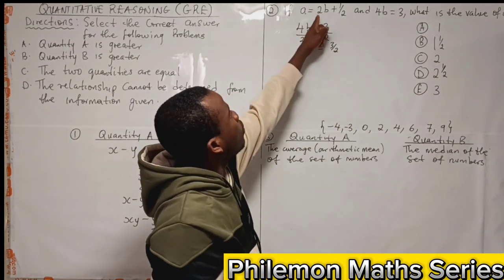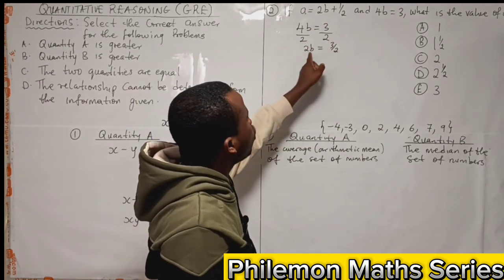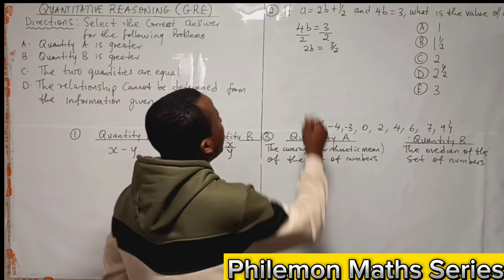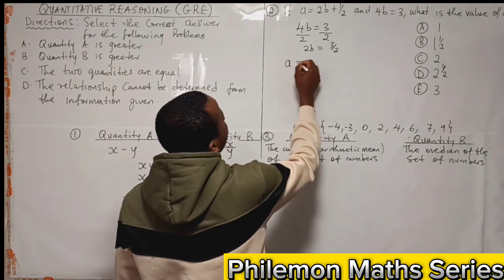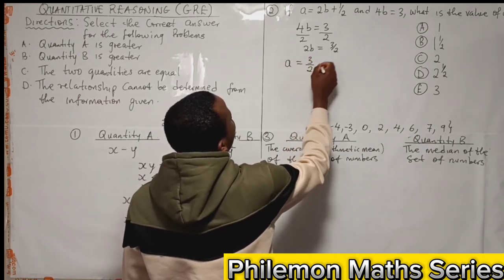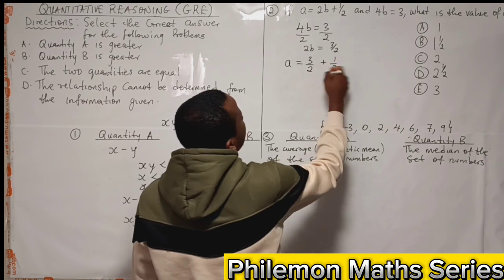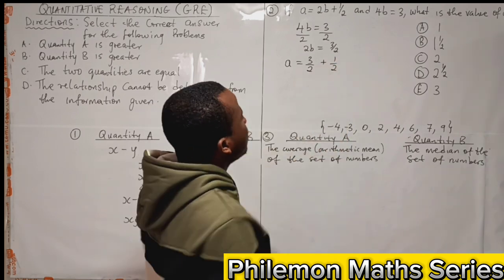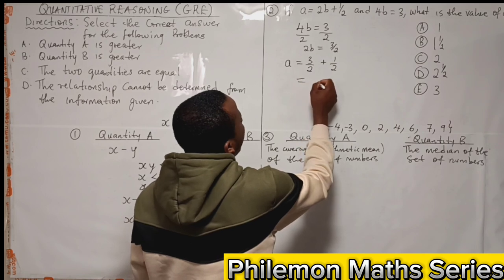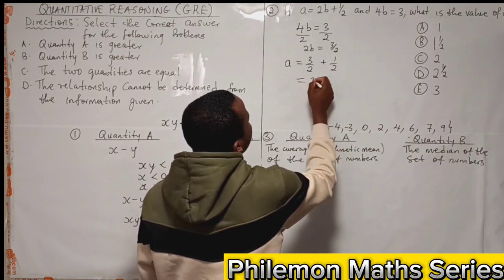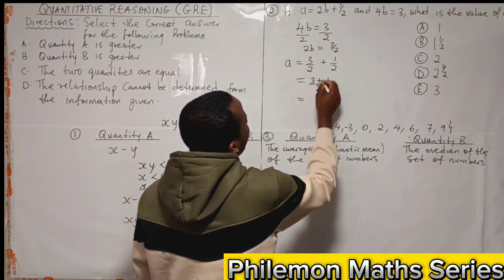Now go to this equation and substitute 2b as 3/2 and get what a is. So we have a to be 3/2 plus 1/2. Since both have the same base, we add the numerators. So we have 3 plus 1, and here we have 4/2, which is 2.